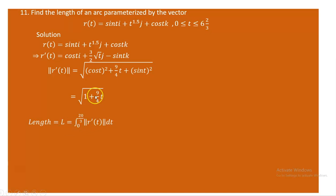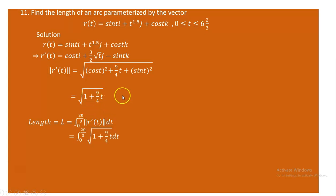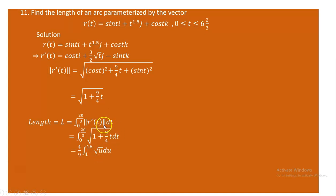Now we apply the arc length formula: the integral from 0 to 20/3 of √(1 + 9t/4) dt. We use integration by substitution: let u = 1 + 9t/4. When t = 0, u = 1. When t = 20/3, u = 16. From the substitution, du = (9/4)dt, so dt = (4/9)du. The integral becomes the integral from 1 to 16 of √u · (4/9) du.